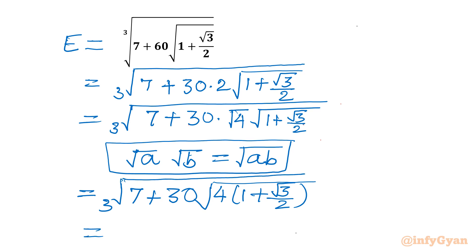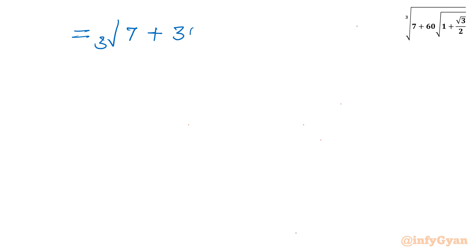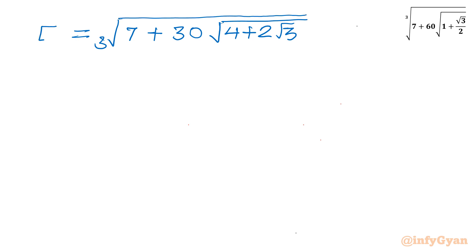Now I will expand this bracket: cube root of 7 plus 30 times square root of 4 times 1 plus 4 times root 3 over 2, which gives 2 root 3. So the expression becomes cube root of 7 plus 30 times square root of 4 plus 2 root 3. Now we can split 4 as 3 plus 1, giving cube root of 7 plus 30 times square root of 3 plus 1 plus 2 root 3.